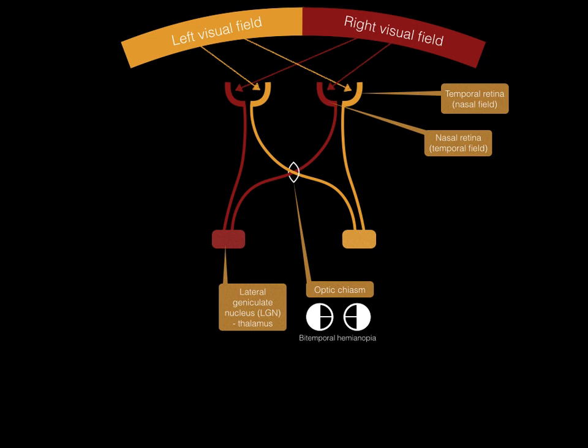Before the optic chiasm, the fibres from each eye spend a period of time together in a structure called the optic nerve, which is the second cranial nerve. If there was a lesion of the left optic nerve, what visual field defect would you expect? A left monocular visual loss — in other words, a left monocular anopia.